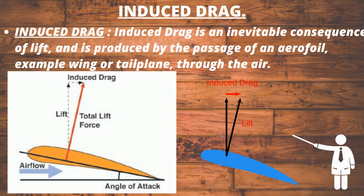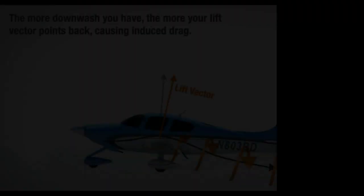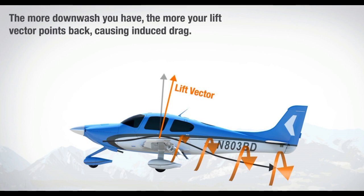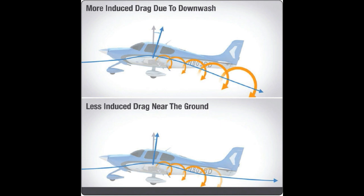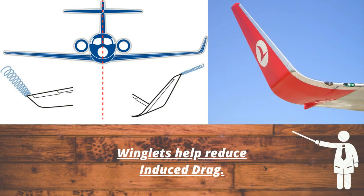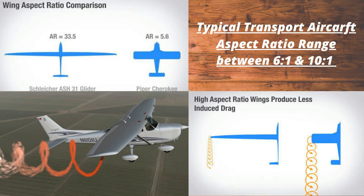Induced drag. Induced drag is an inevitable consequence of lift and is produced by the passage of an airfoil — such as a wing or tailplane — through the air. In level flight, the aerodynamic properties of a wing produce the required lift, but only at the expense of a penalty called induced drag. Induced drag is inseparable from the production of lift and is always present if lift is produced. A direct consequence is the continual spilling of air upwards around the wingtip, a phenomenon called tip effect or end effect.